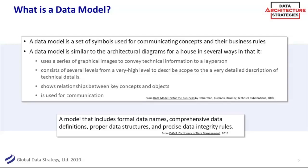Taking another definition from the DAMA Dictionary of Data Management, a data model includes those formal names, proper data structures, and precise data integrity rules. Something as simple as: can a customer have more than one email address? Can they have a text and a cell phone? We've probably all had negative customer experiences where those business rules weren't in the system. Can I have a PO box and a mailing address, or am I getting my mail at the wrong place? Some of these very simple business rules can really have downstream business effects.